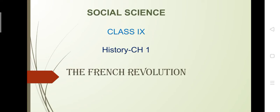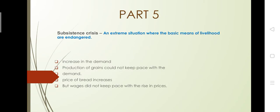Social science, class 9th, history chapter 1 — the French Revolution, part 5. The topic for today is subsistence crisis. It is an extreme situation where the basic means of livelihood are endangered.